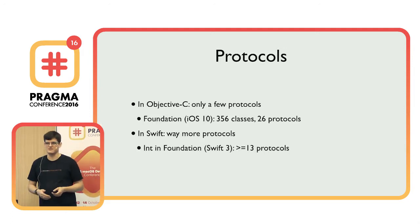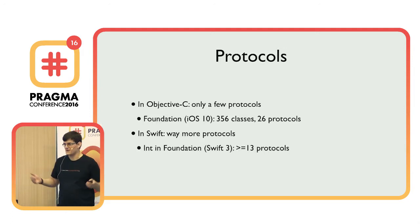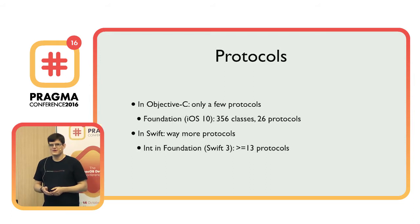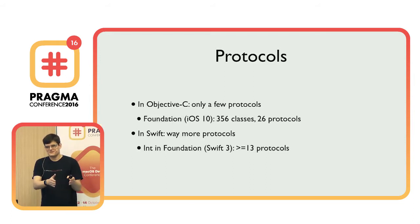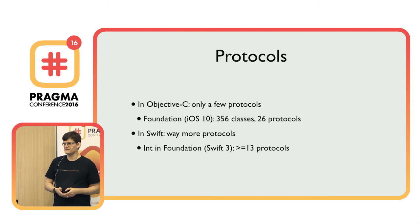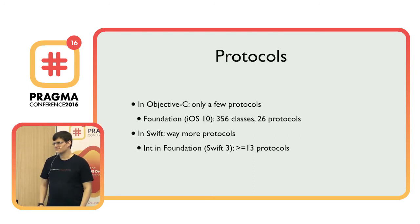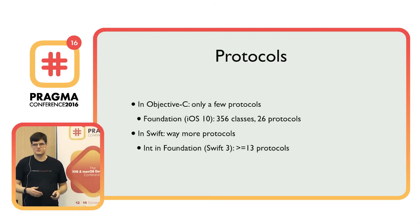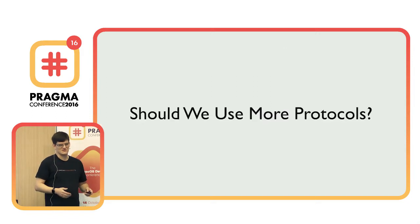I stopped counting at 13 because, again, I'm lazy. So how is it that in Swift one type has half as many protocols as our whole Foundation framework in Objective-C? Maybe we should ask the question whether we should use more protocols, and if they are so cool in Swift, why not use even more?